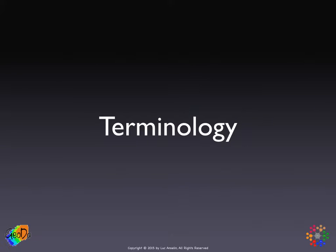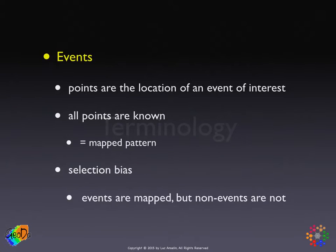I'll cover some basic terminology that pertains to point pattern analysis and the types of point patterns that we can investigate. First of all is the key concept of an event. As we saw in the introductory lecture, point patterns are locations of events. These events could be accidents, crimes, the location of facilities. What is very particular about point pattern analysis is that the events shown on the map — that's why it's called a mapped pattern — are all assumed to be known.